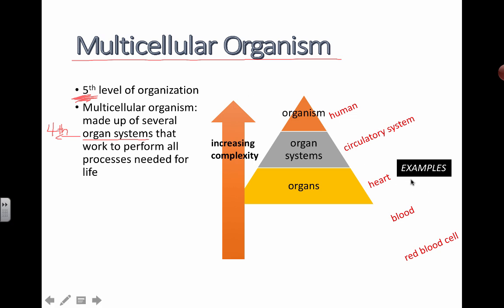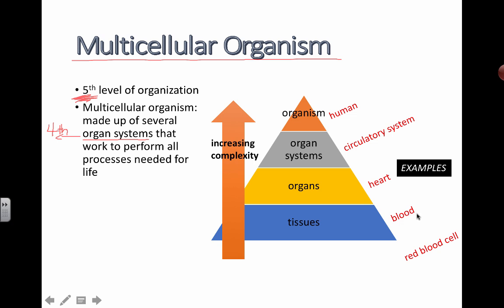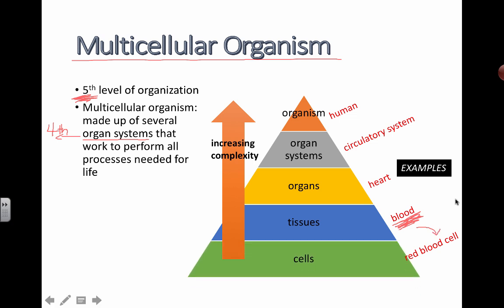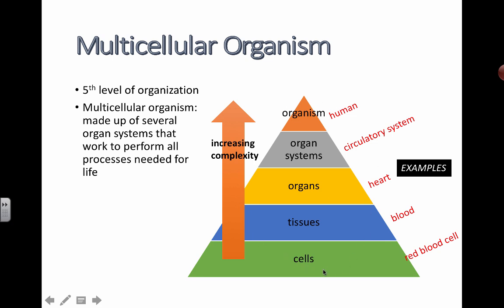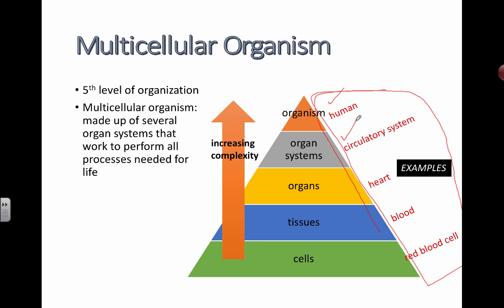At the third level you have organs like the heart. At the second level you have tissues — blood is actually an example of a tissue, something people don't think of often, but blood is a collection of red blood cells working together. At the first level you have your cells. That's a nice summary of the five levels of organization: cells, tissues, organs, organ systems, and organism. You should know an example of each.